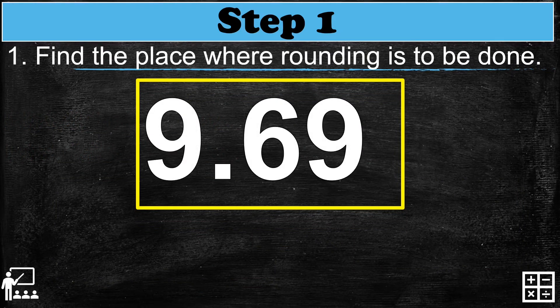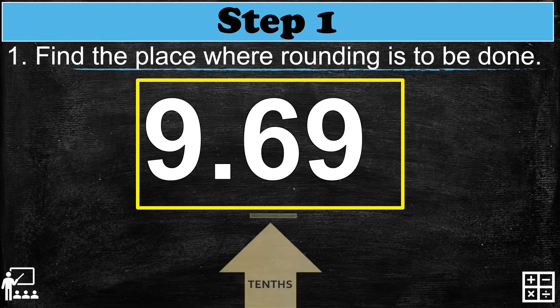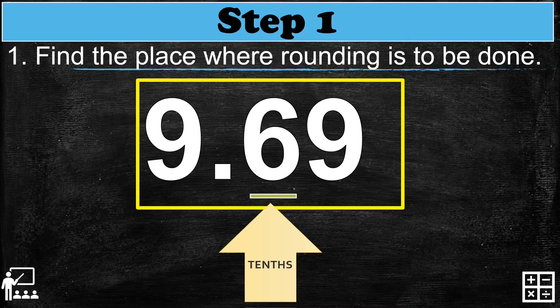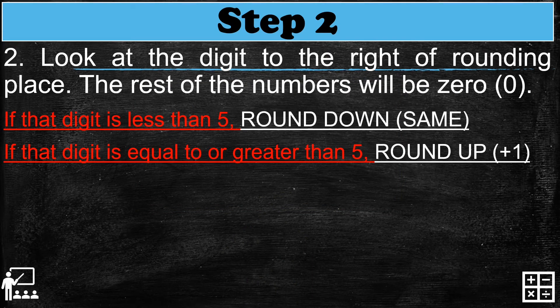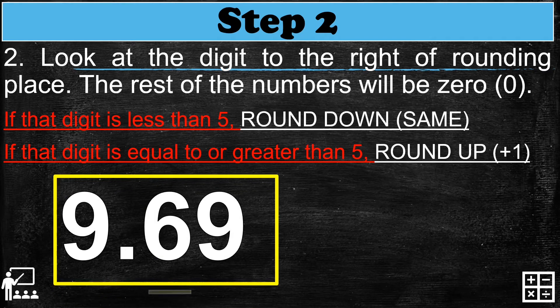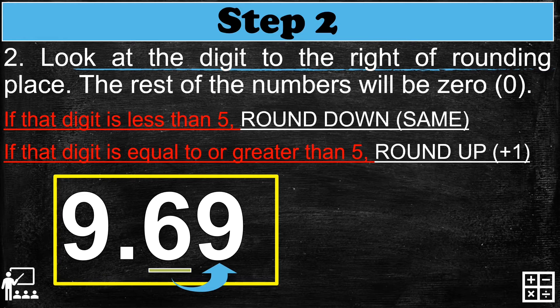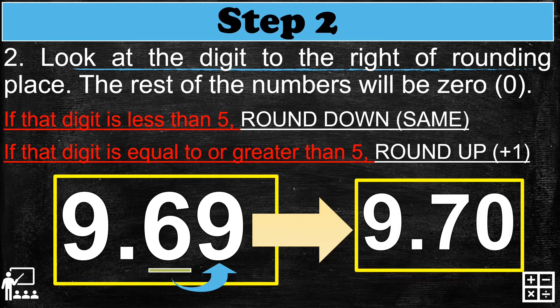Another example: 9.69, or nine and sixty-nine hundredths. We focus on the tenths place value — the digit is six. Step two: look at the digit to the right of the rounding place. The number to the right is nine, and nine is greater than five, so we round up. We add one to six, giving seven. Our new decimal is 9.7.